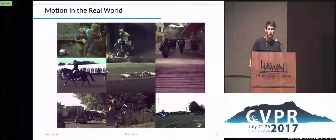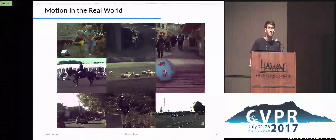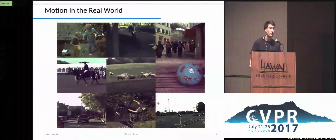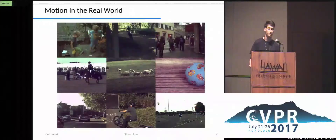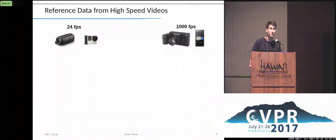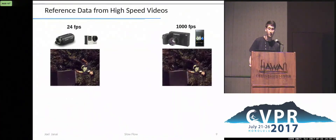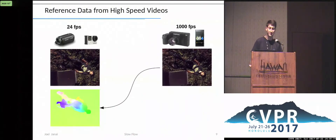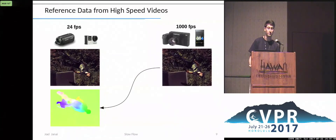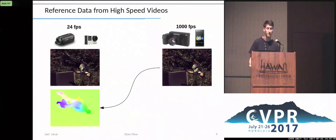What if we could obtain reference data just by running around with a camera? We propose a methodology to automatically create optical flow reference data from real sequences using high frame rate videos. Nowadays, even mobile phones can record up to 960 frames per second. Thus, in the future, we expect that many high-speed videos will be available online and can be used to generate even more reference data.